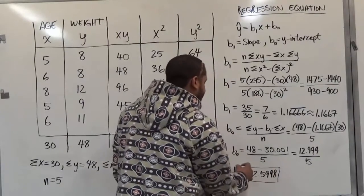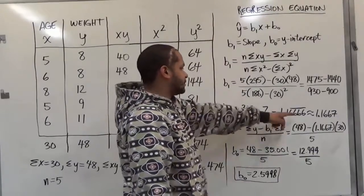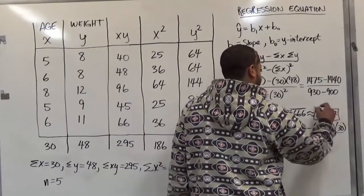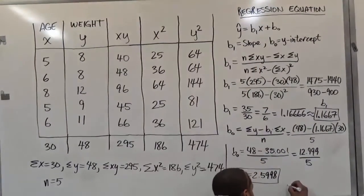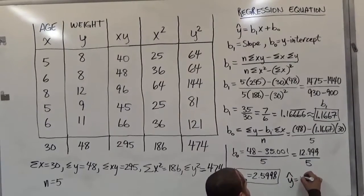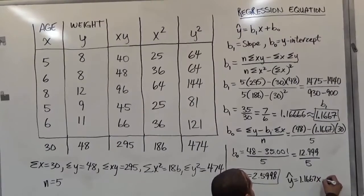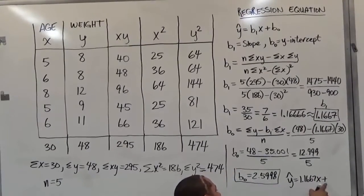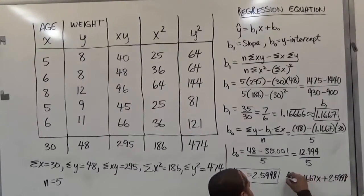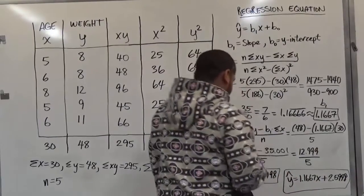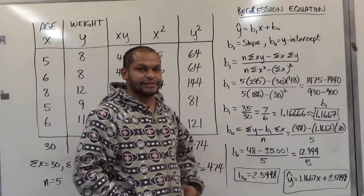Now to complete the equation of the line, it's pretty straightforward. All we're going to do is we're going to take this equation. We're going to substitute our b1, which is 1.1667, and we're going to insert our b0. So here we'll have y hat equals 1.1667x plus, since the y-intercept is positive, we keep this positive, 2.5998. That's our final value for our equation of the predicted value equation. There's our regression equation line. Thank you.